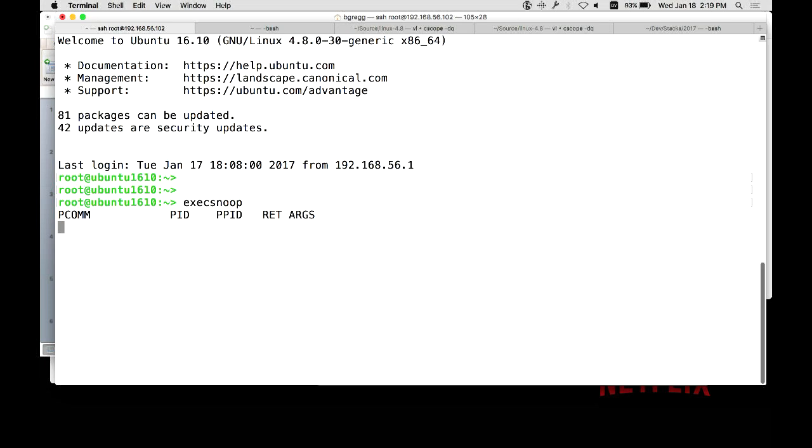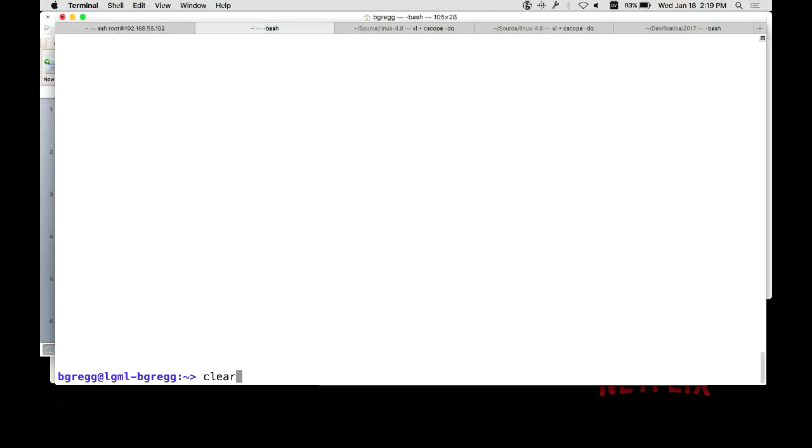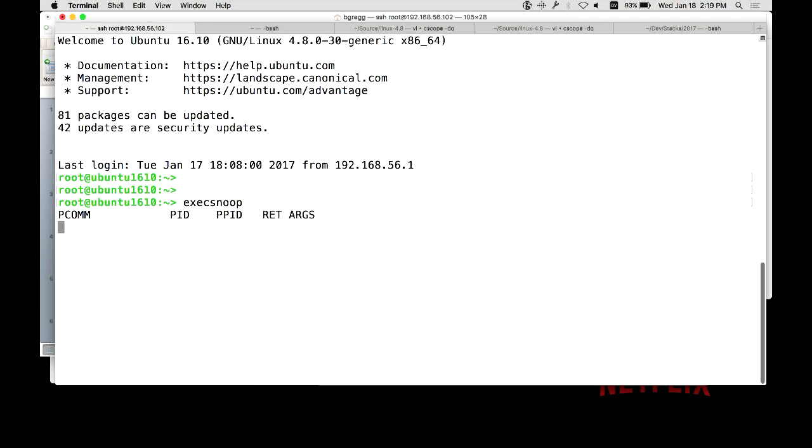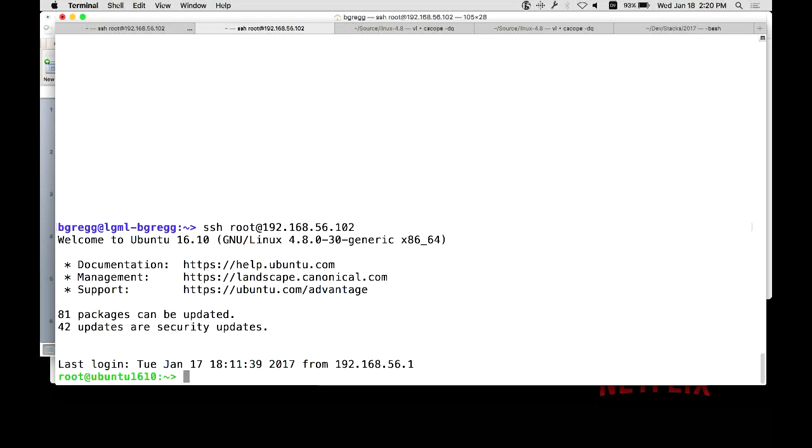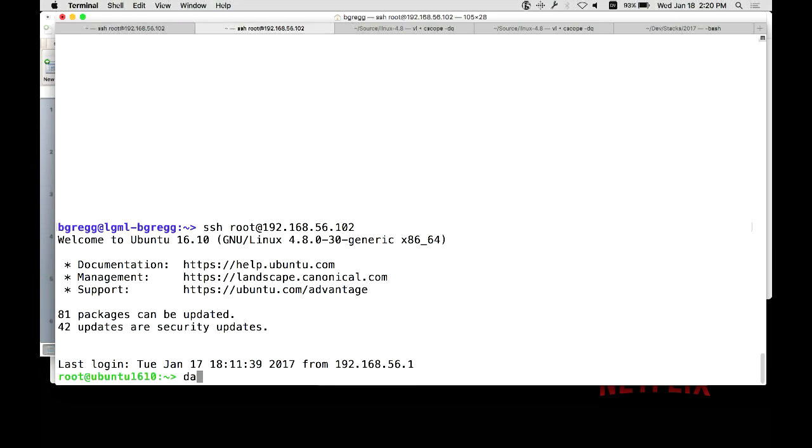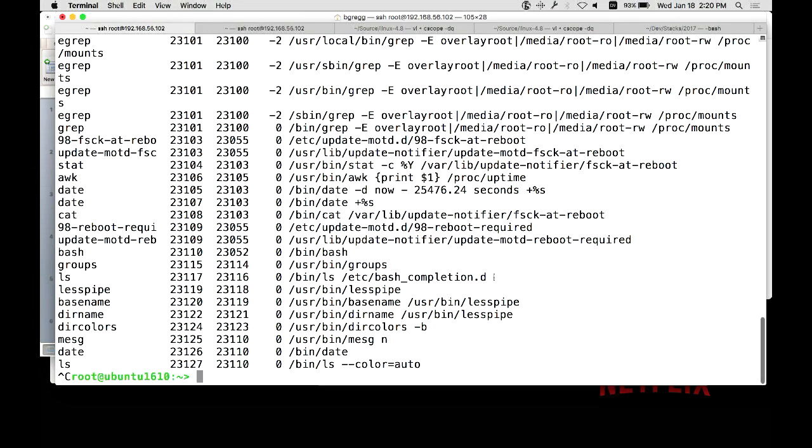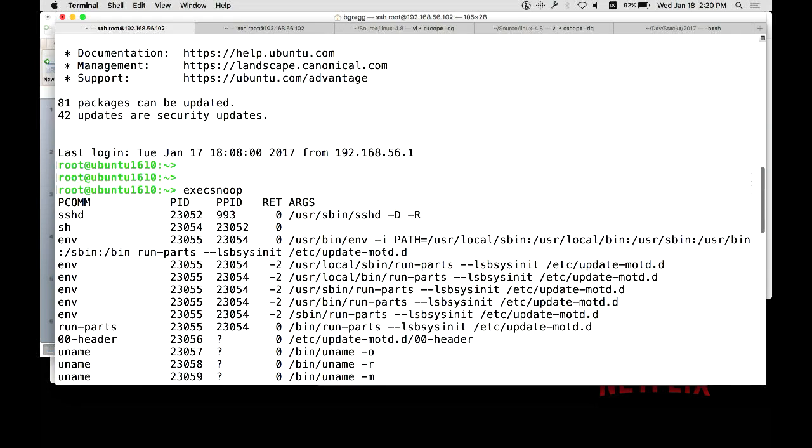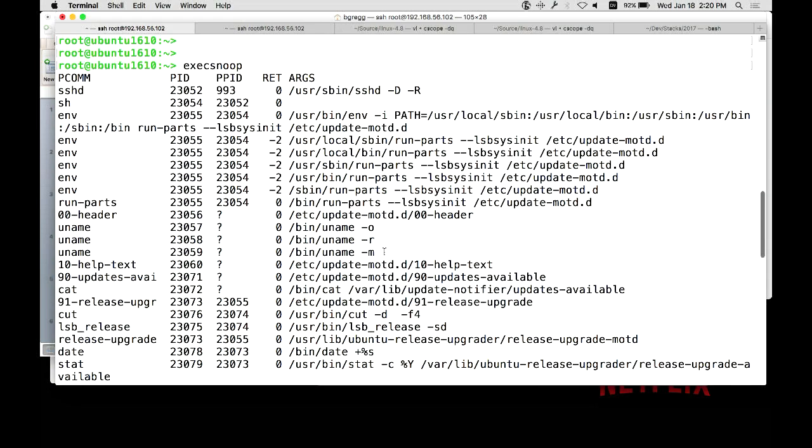I'll demonstrate some tools I wrote with BPF. These are open source tools in the BCC GitHub repository. So execsnoop traces which commands are executed on that machine. Now, I just logged in from another terminal window, and I can see everything that was run: date, ls. Oh, ls is actually aliased to ls --color=auto.